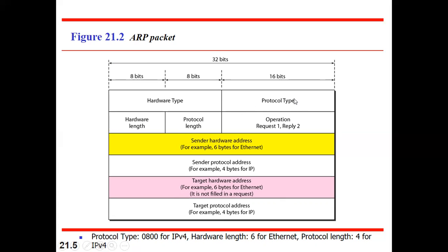The next field is protocol type, a 16-bit field defining which protocol requires the ARP request. For example, IPv4 — if IPv4 is used, the protocol type value will be 0x0800. ARP can be used with any higher-layer protocol; here, the IPv4 protocol at the network layer is making use of ARP services, so the protocol type is included as 0x0800.